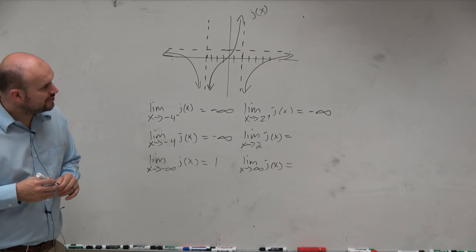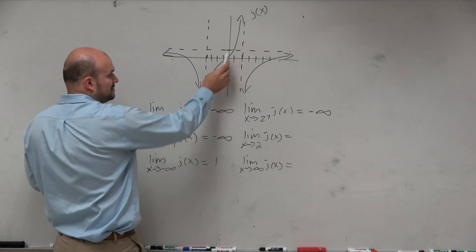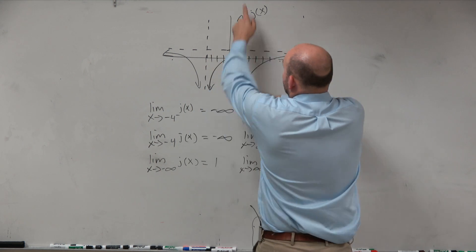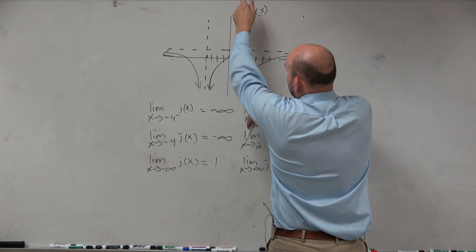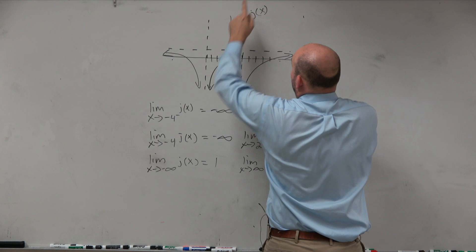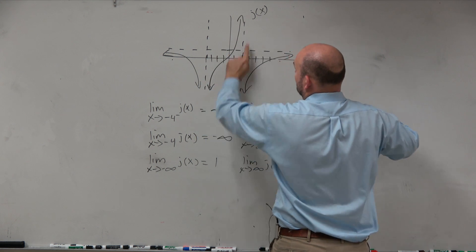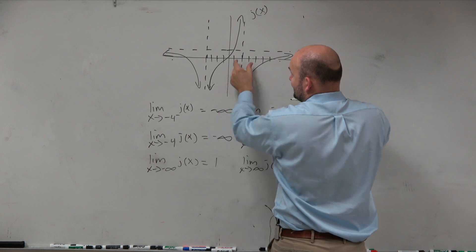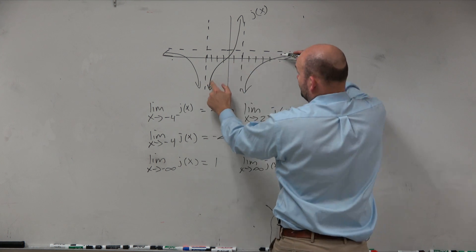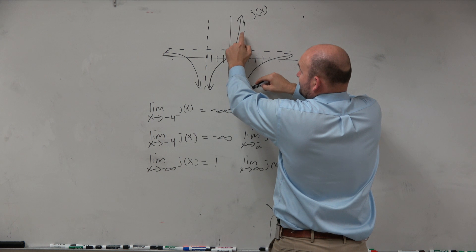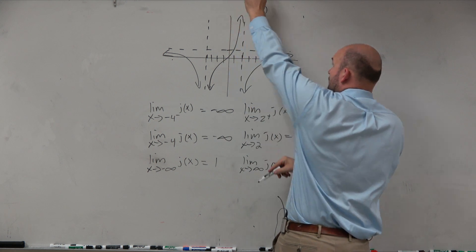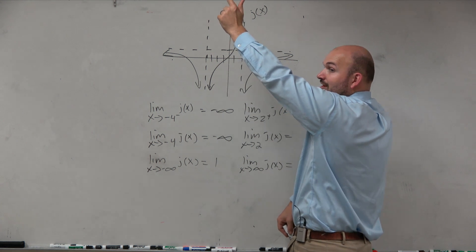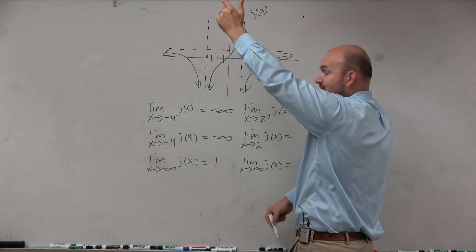Now, the limit as x approaches 2 of j of x — that means we need to approach from both the left and the right. When we approach from the left and the right, what j of x value are we approaching? x is approaching 2, getting closer and closer. But from the left it's one value and from the right it's another — can it be both? No. So the limit does not exist.